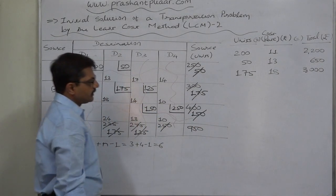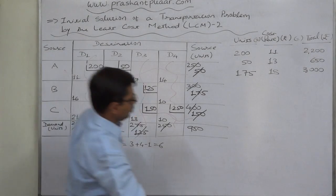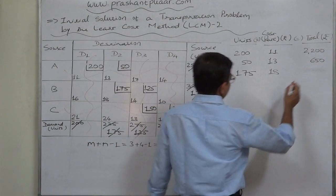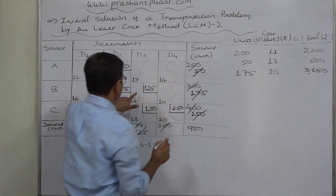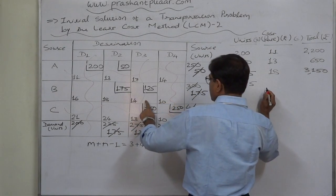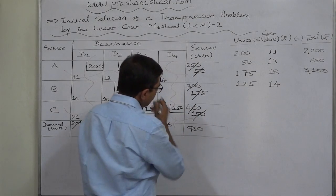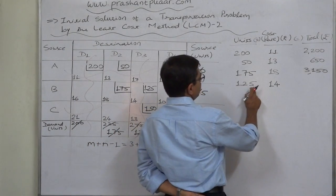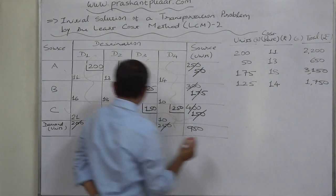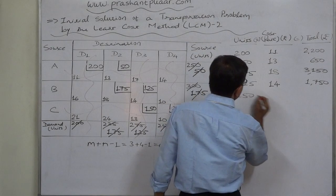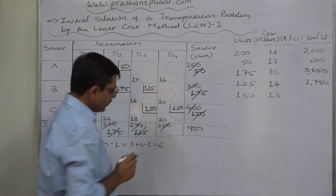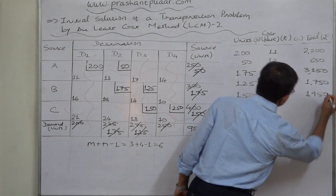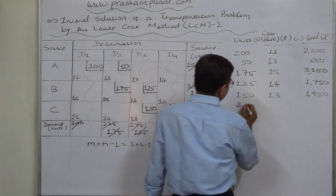175 units at 18 rupees: 18 × 175 = 3,150 rupees. Next: 125 units at 14 rupees = 1,750 rupees. Next: 150 units at 13 rupees — 13 × 150 = 1,950 rupees.